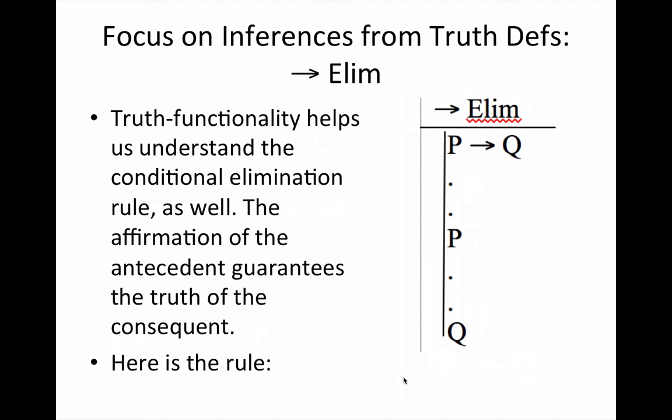or it guarantees the consequent. So the antecedent is thought to be a sufficient condition. The antecedent is thought to guarantee the consequent. So when we say, if P, then Q, we're saying that on the assumption that P obtains, Q also obtains. So that when P does obtain, Q follows.